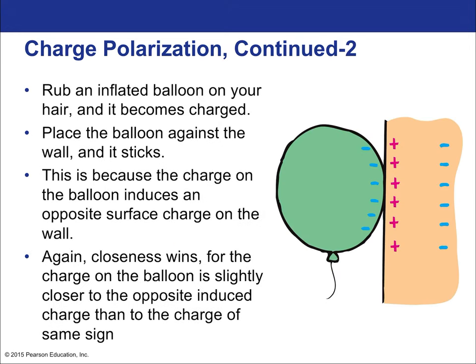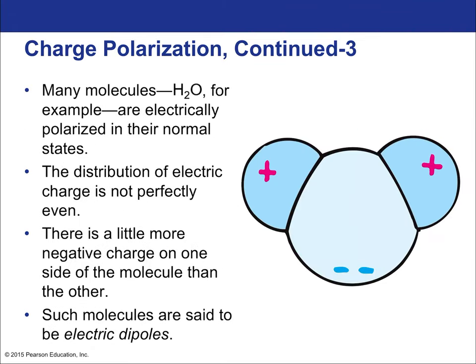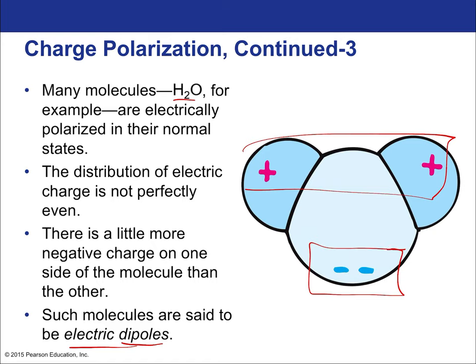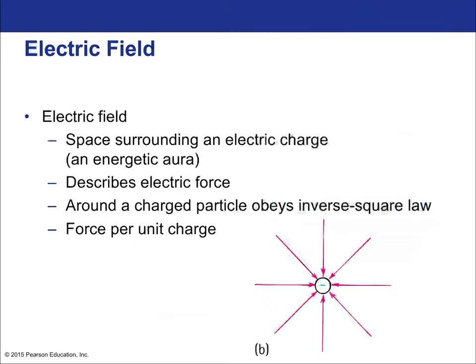Rubbing and inflating a balloon on your hair charges it; place it against the wall and it sticks because the charge induces an opposite charge on the wall—closeness always wins. Many molecules such as water are electrically polarized in their normal state; the distribution of electrical charge is not perfectly even, with more negative charge on one side than the other. Such molecules are said to be electric dipoles—permanent electric dipoles with a positive pole and a negative pole, just like a magnet, battery, or planet.